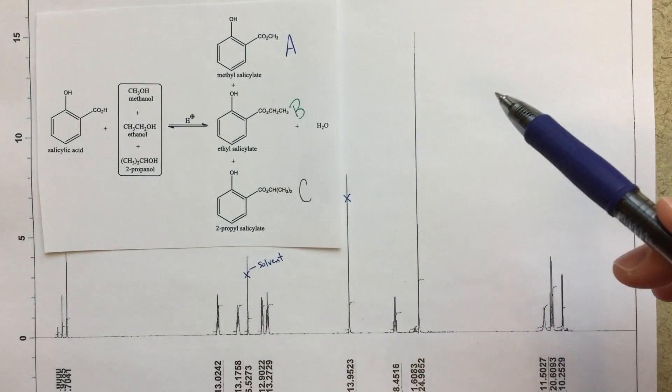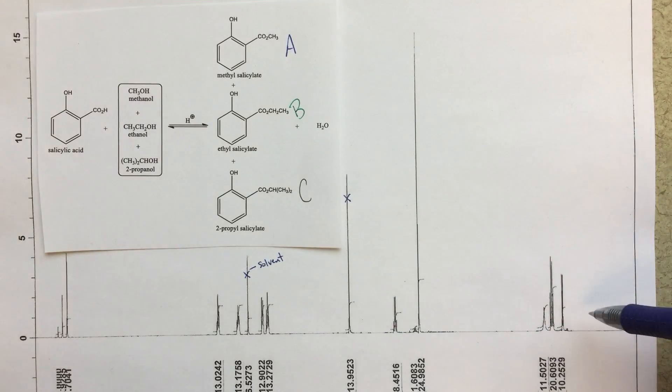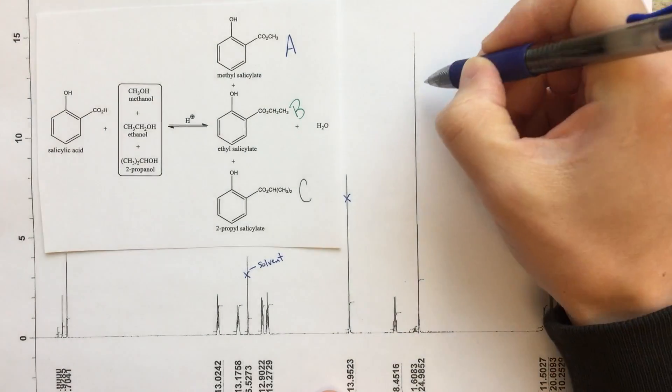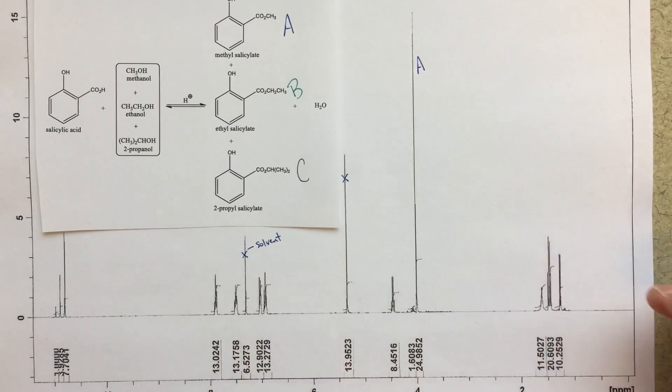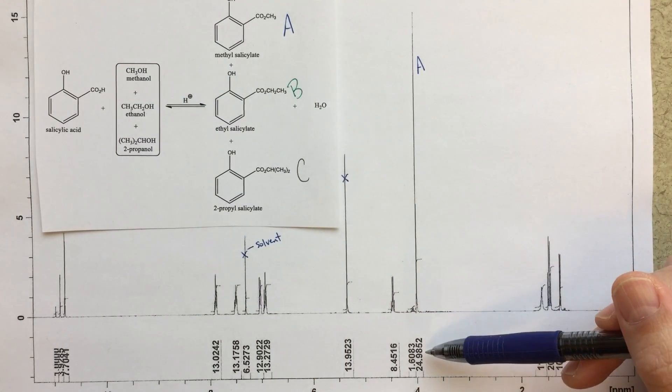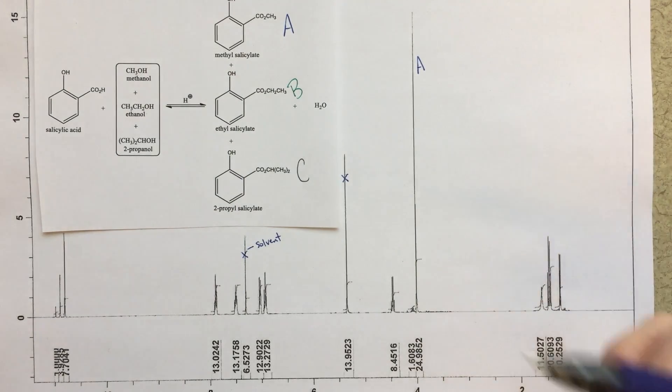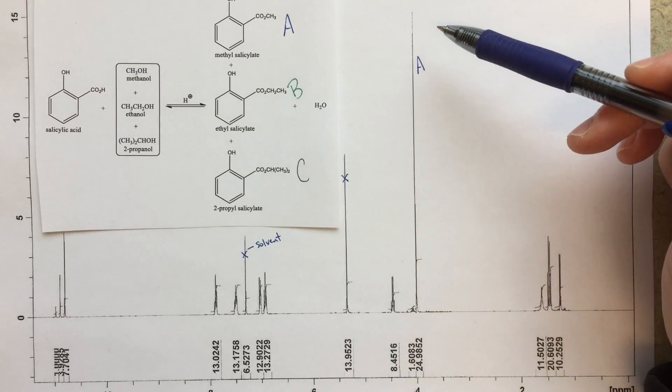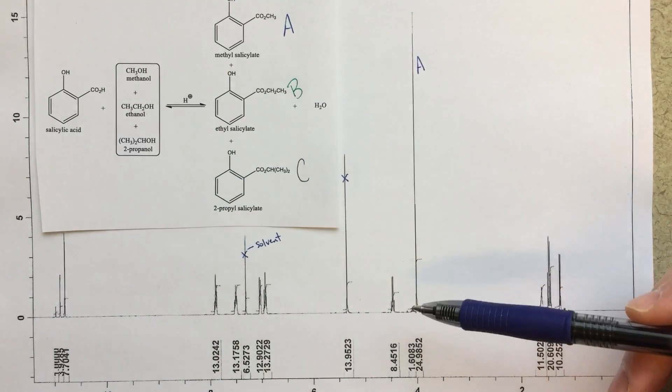So this methyl group, it should be pretty high, and it should be a singlet. So out of my peaks in this region over here, the one that fits the bill very nicely is this peak here at about four. That's, I think, very clearly going to be from this methyl group. So this integration of 24.9852, that's a pretty big integration.